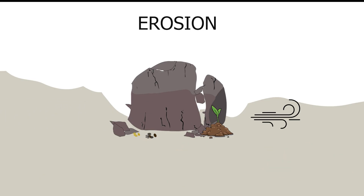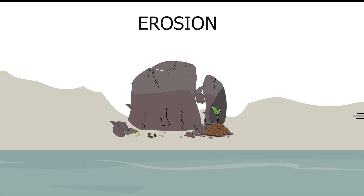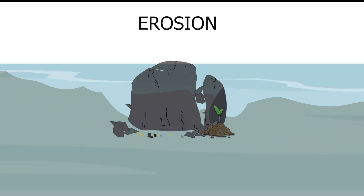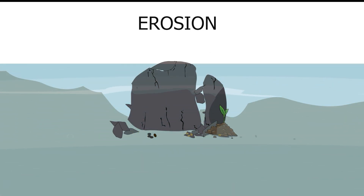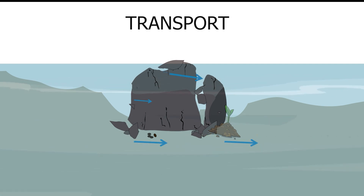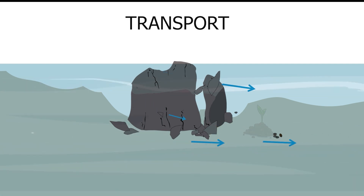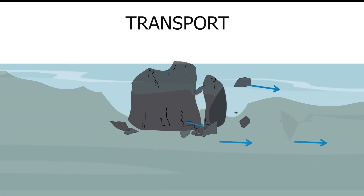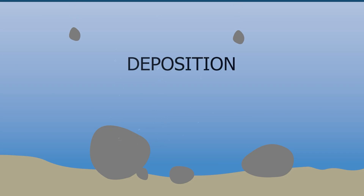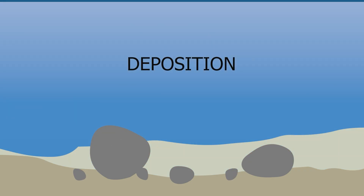Erosion is the natural process of taking these grains and carrying them away, also called transporting. When sediment grains settle someplace away from their original site, it's known as deposition.